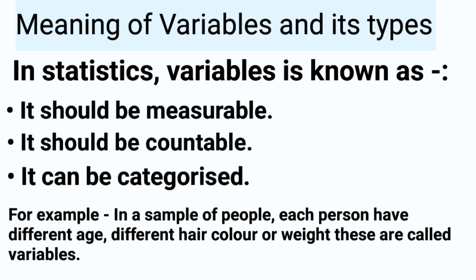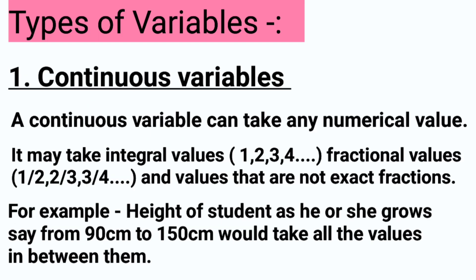We will discuss the time-to-time changes in data — we will know the variable. We will talk about two variables: continuous and discrete. First of all, we will talk about continuous. This is a variable with a numerical value.